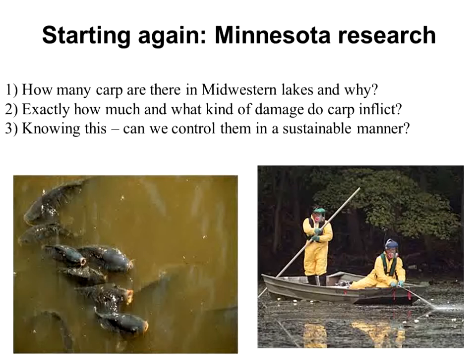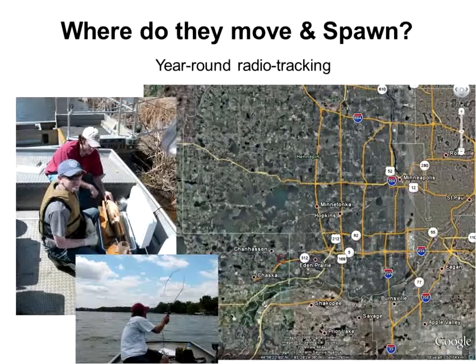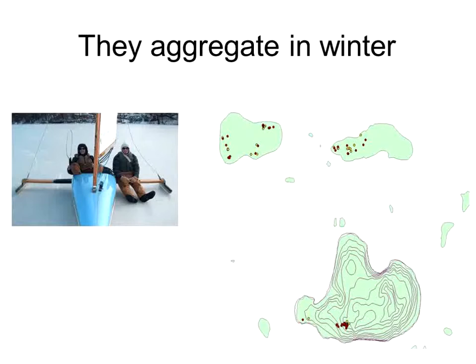We felt that before you could even start to control a species, you had to know how many there were. So we started by seining entire lakes and doing mark-recapture to come up with population estimates. That's important because if you're going to do removal, you'll never get them all out — so you have to know what it means when you remove a certain number. We also needed to know how they were moving across the environment: where were the weak links, the aggregation spots, where do they spawn?